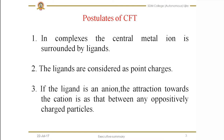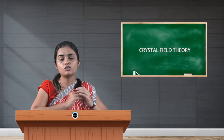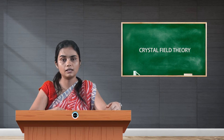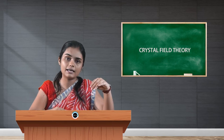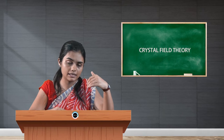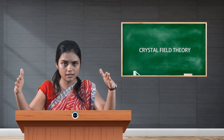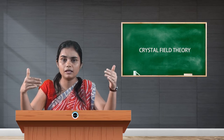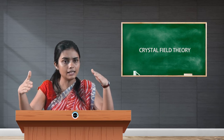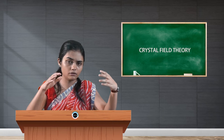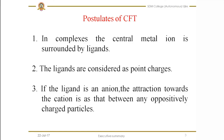The third postulate says that if the ligand is an ion, the attraction towards the cation is that between any oppositely charged particles. According to this theory, the interaction between the metal and ligand is due to electrostatic interaction — just how interaction takes place between a positive charge and a negative charge. If you consider the ligand as an ion, that means negatively charged, then the attraction towards the metal ion should be like the interaction between a cation and an anion.